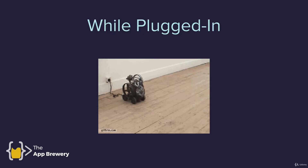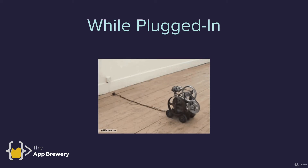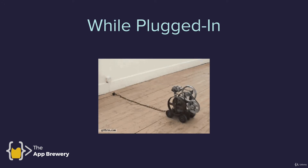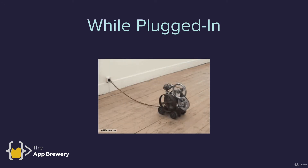This is a really simple version of a robot that's using a while loop. In this case, the instruction would be: while you are plugged into the wall and you have electricity, move forwards. It will stop once it pulls the socket out of the wall and stops receiving electricity.